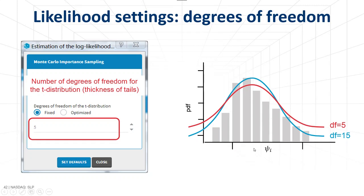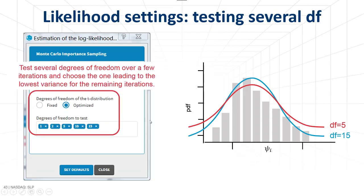If you set it to a large number, we're going to have thin tails, looking similar to a normal distribution. And on the opposite, lower numbers correspond to thicker tails. From our experience, 5 works well, but there is also an option to try several degrees of freedom over a small number of samples, and check which one gives the lowest variance.